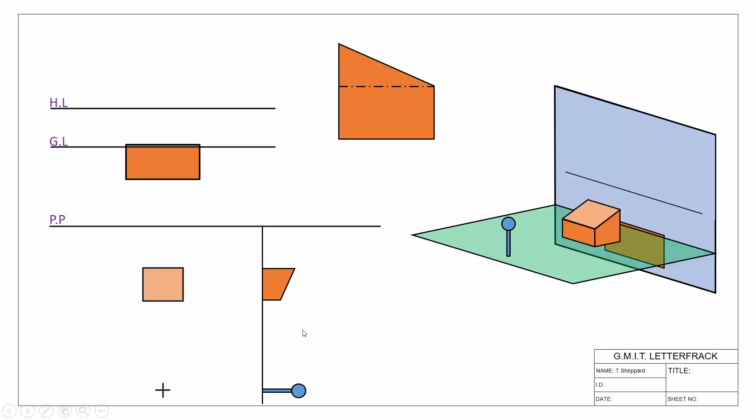We're first of all going to look at how we find a vanishing point for a line that is level. So this line here, say this corner. We know already that if we want to find our vanishing point, we just look parallel to it.